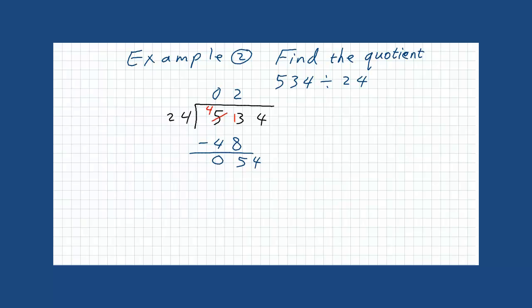54 divided by 24. It's also 2. 2 times 24 is 48. Subtract. You will have 14 minus 8. This will give you 6, and 4 minus 4 is 0. Our answer is 22, with a remainder 6.